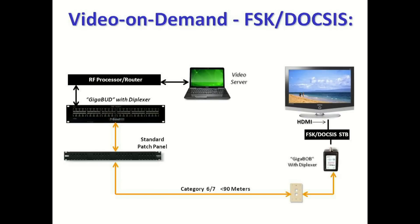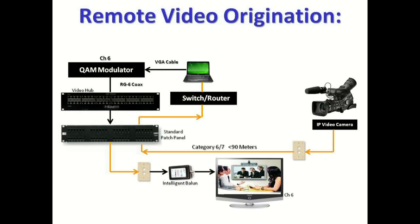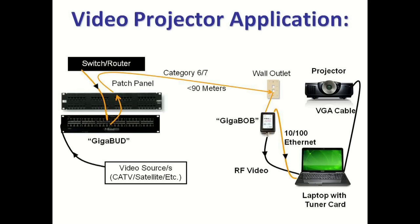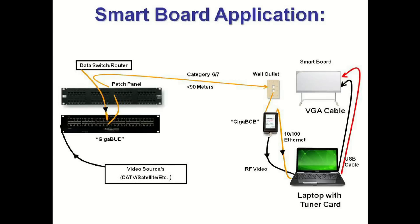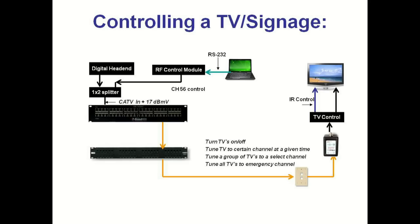Video on demand services are similar to the IP solution — in most cases a set top box is required, and the balun is equipped with a diplexer that allows FSK or DOCSIS communication to travel upstream on pins 4 and 5 to communicate with the video server. Remote video origination is easy with an IP camera: the video is transported over the network and modulated to a channel for redistribution. A video projector or smart board integrates easily through an RF tuner installed in any laptop or PC. Controlling TVs can also be done through our system with RS-232 or IR control, allowing you to turn TVs on and off, change channels, or set groups of TVs to a select or emergency channel.